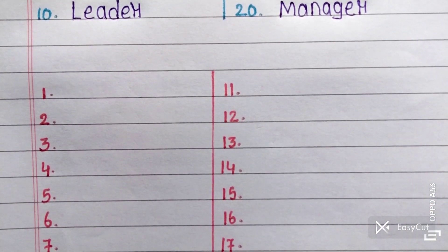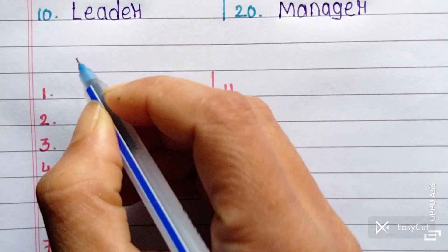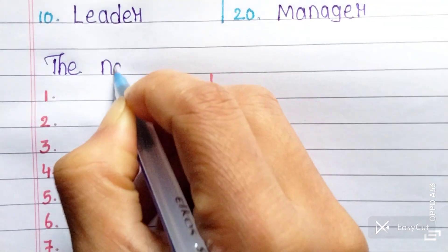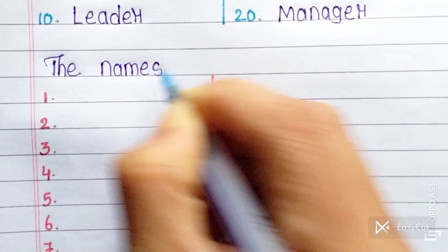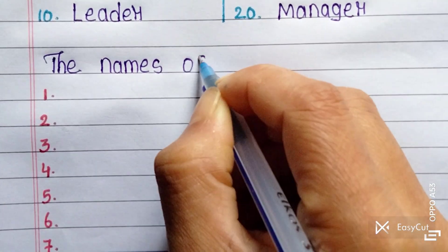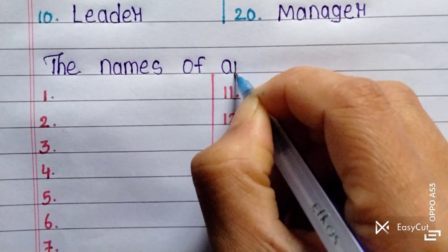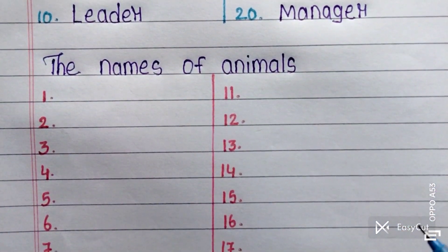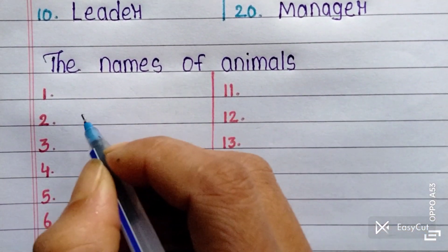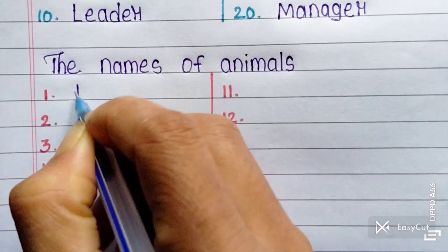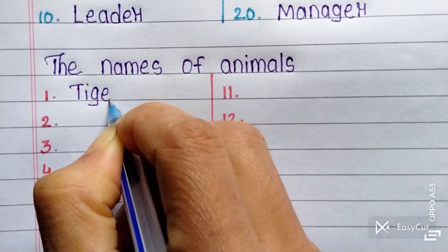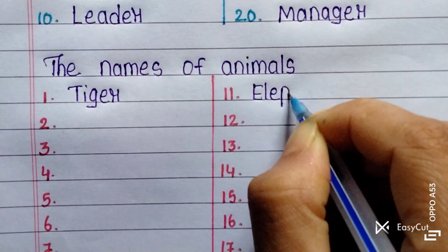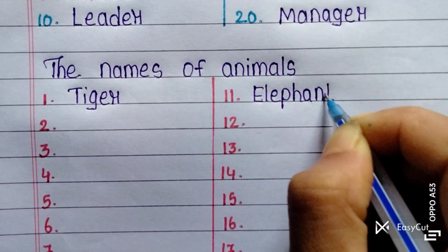Next one is the names of animals. Tiger, elephant.